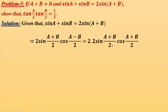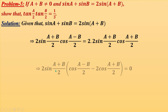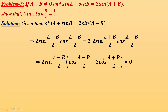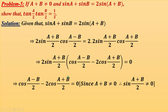So we have 2sin((A+B)/2)cos((A-B)/2) = 2·2sin((A+B)/2)cos((A+B)/2). Since A + B ≠ 0, sin((A+B)/2) ≠ 0, so we can divide both sides by it. This gives cos((A-B)/2) - 2cos((A+B)/2) = 0, which is our working condition.